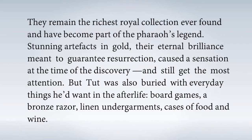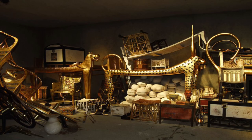Tut was also buried with everyday things he'd want in his afterlife — not only gold, but board games, a bronze razor, linen undergarments, cases of food and wine — everything a person would need in daily life was buried along with Tut in the tomb. In this picture you can see some of the collections of items that were there along with the body — so shining, made of gold, along with cases of food and wine and many other things necessary for his life after death.